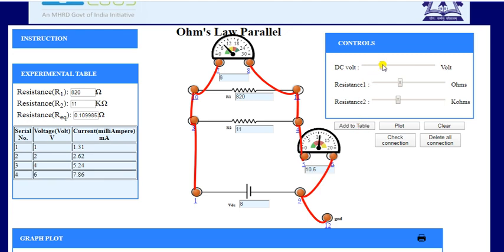We have to make a list of these values. That is our experimental table. Then we will draw the graph between voltage and current with the help of these values.